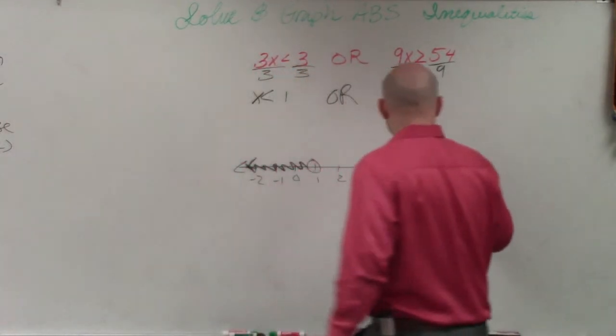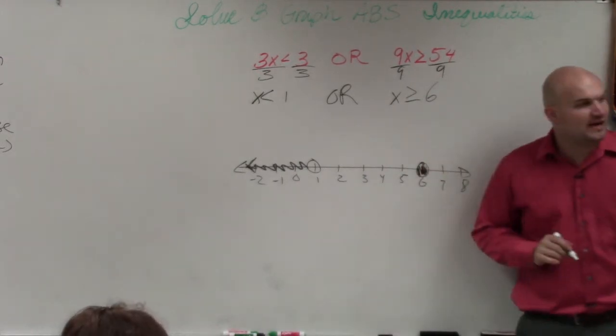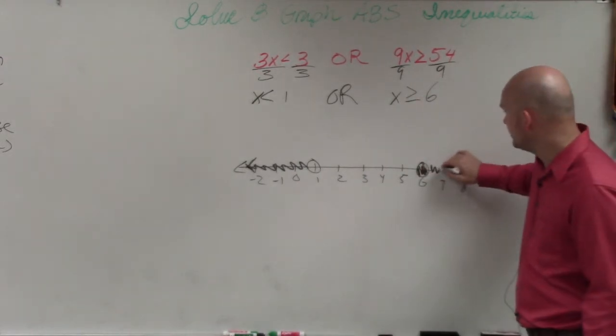Then we do x is greater than or equal to 6. Greater than or equal to is going to be a closed point. And then all the values that are greater than 6 are going to go to the right.